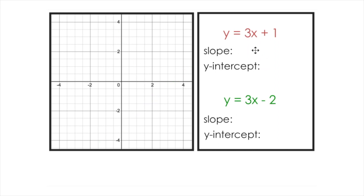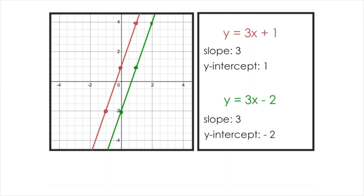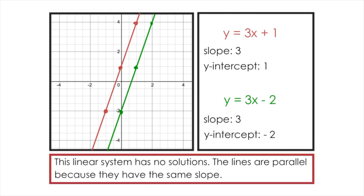For the second example, we'll start the same way and pick out the slopes — both lines have a slope of 3. We'll also identify the y-intercepts, then graph both lines. Starting with the y-intercept and using the slope to produce three points for each line, you can see that these lines appear to be parallel. That makes sense: whether I start at 1 or negative 2, rising 3 and running 1 each time does the exact same thing from a different starting point. So these two lines are parallel and will never intersect — a characteristic of linear systems where the slopes are the same.